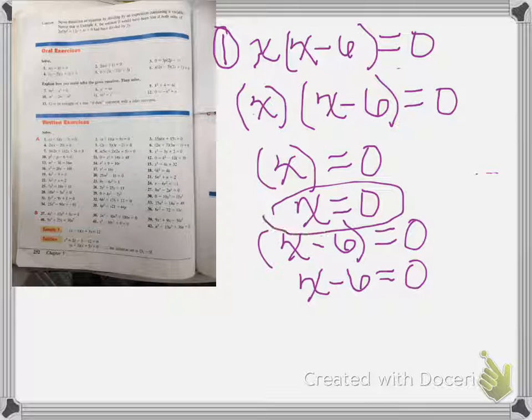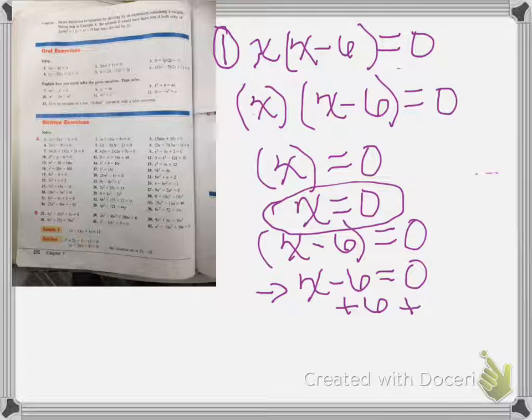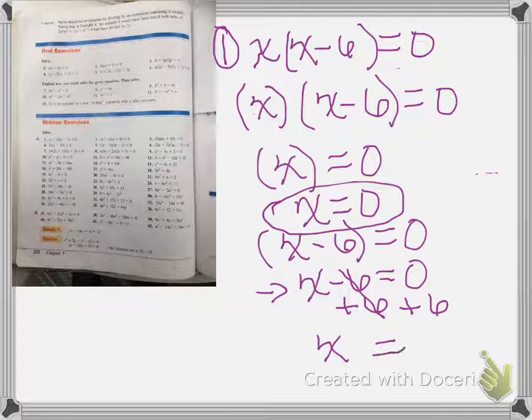This one, the x is already by itself, this one is not, so we have to start getting it by itself. So the opposite of negative 6 is adding 6. So then we bring down our x, 6 minus 6 is zero, equals 6.